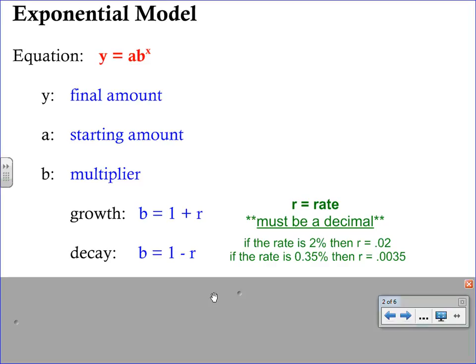So back to our multiplier. If you're looking at growth, meaning you have a quantity that is getting bigger with time, you're going to calculate that b value by doing 1 plus r. If you have decay, a situation where something is decreasing or declining over time, you're going to calculate b by doing 1 minus r.